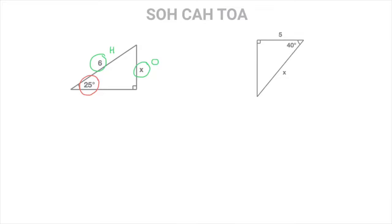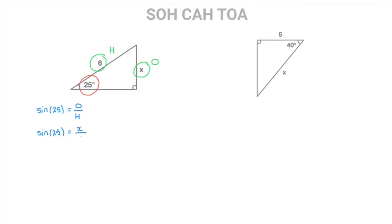In doing so, it doesn't take us long to see that the only one with O and H is SO. SO tells us that the sine of an angle is equal to its opposite side length divided by the hypotenuse. So for this 25-degree angle, that becomes sine of 25 equals the opposite over the hypotenuse. Now replacing O by X and H by 6, that becomes sine of 25 equals X over 6.